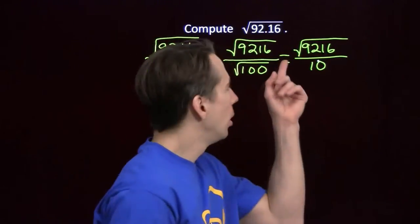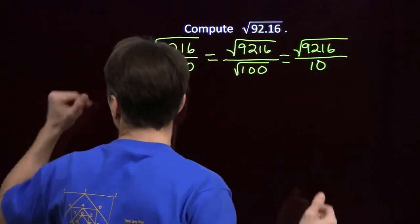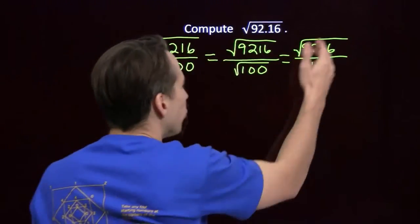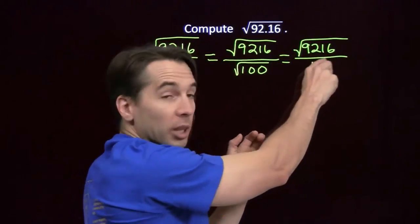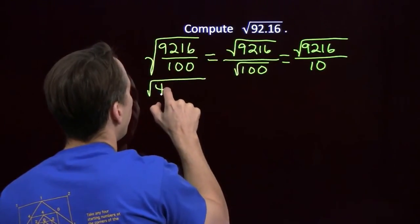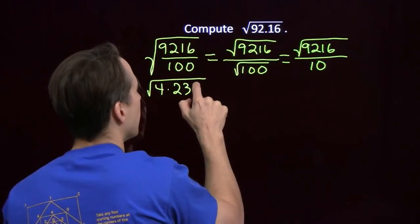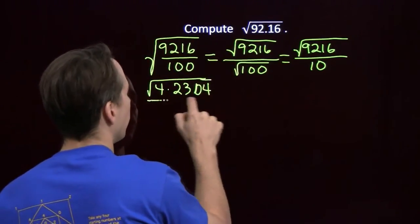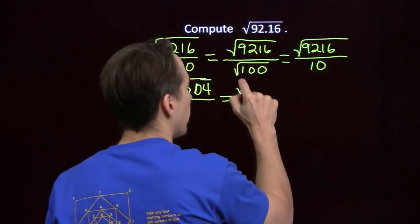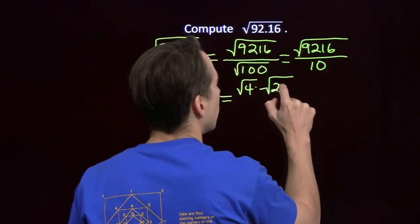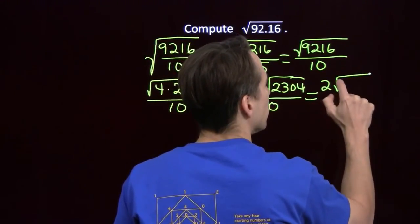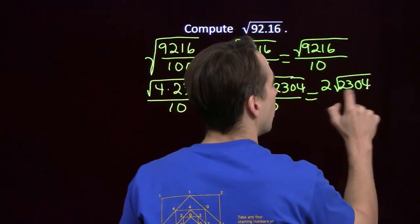Now what? We can start pulling out factors, just like we've done on earlier problems — like how we broke 75 into the square root of 25 times the square root of 3. We can pull a 4 out of 92.16, because the last two digits form 16, which is divisible by 4. We write this as the square root of 4 times 2304, all over 10. Pulling out the square root of 4 gives 2, so we have 2 times the square root of 2304, all over 10.